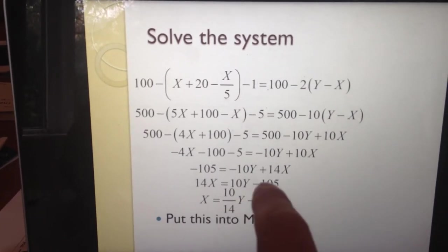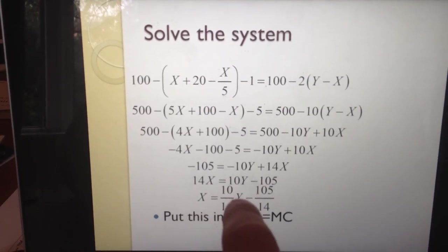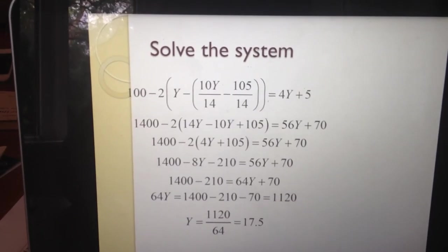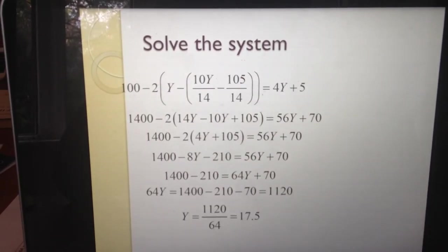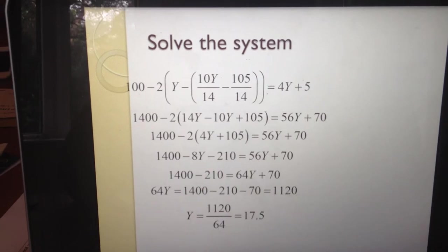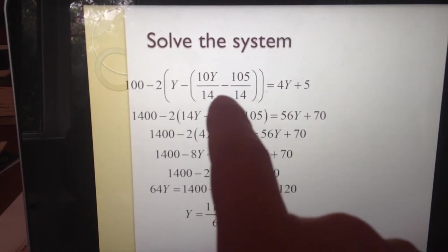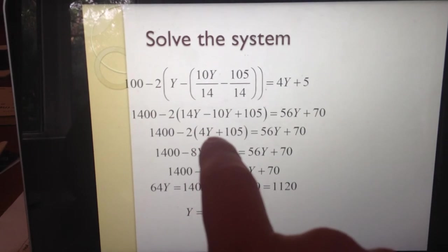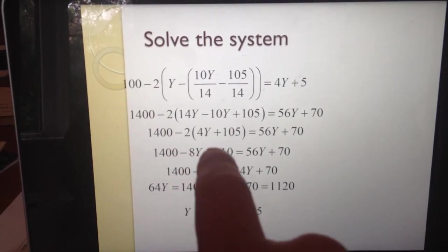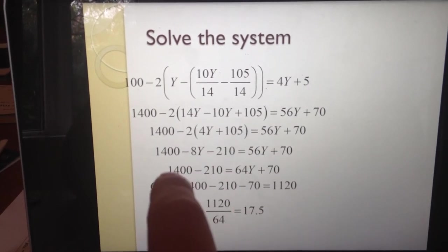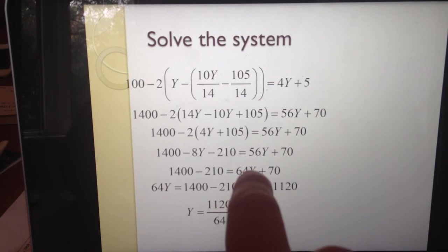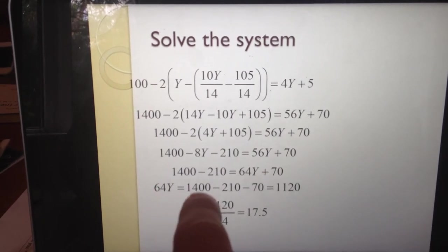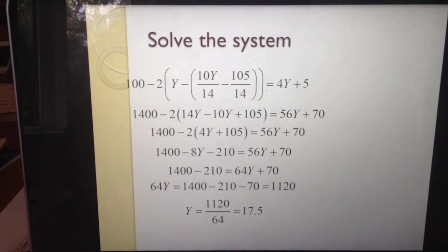So 14x equals 10y minus 105. Dividing by 14 gives the relationship between exports and production in Ireland with FDI. Taking that x and substituting back into the marginal revenue equals marginal cost equation for Ireland, multiplying both sides by 14 to clear fractions, combining y terms and constants, collecting 8y to the other side gives 64y, combining the constant terms gives 64y equals 1120.